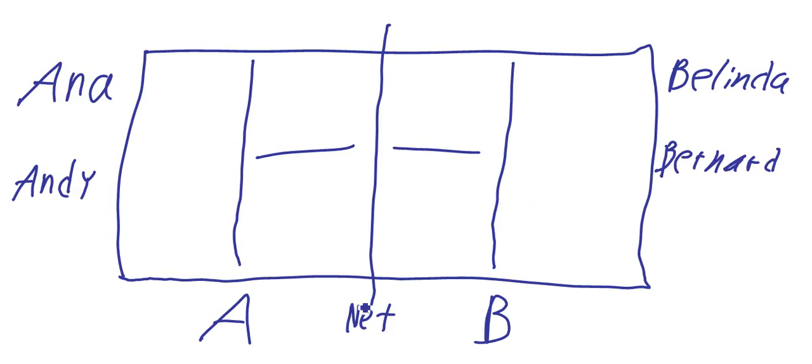Anna versus Belinda and Andy versus Bernard. They can also play mixed doubles or doubles, whatever. The essential thing I want to say here is there are two parties, party A versus party B. And the question is how do we count in tennis? Counting in scores.